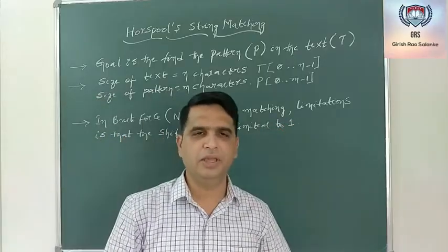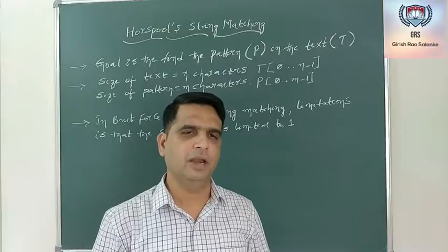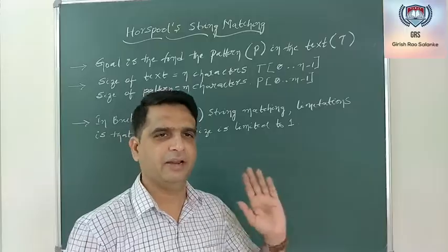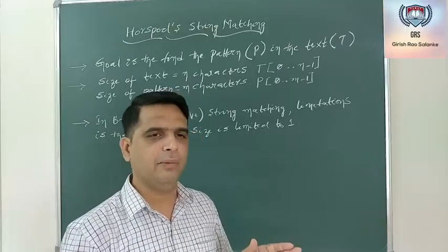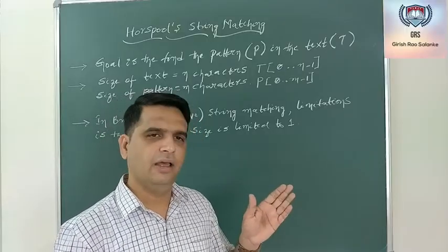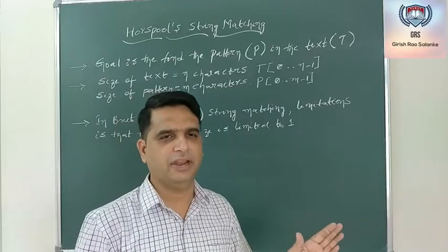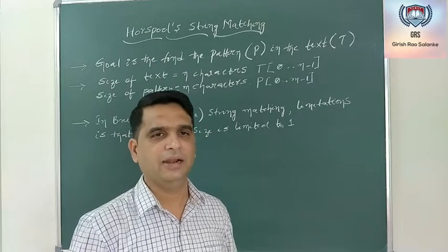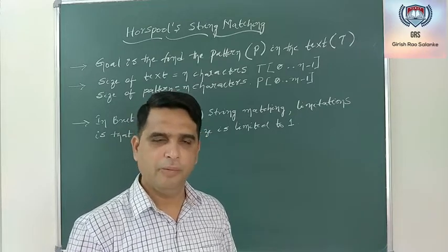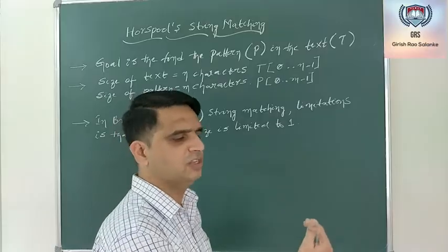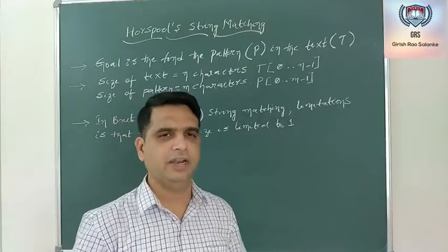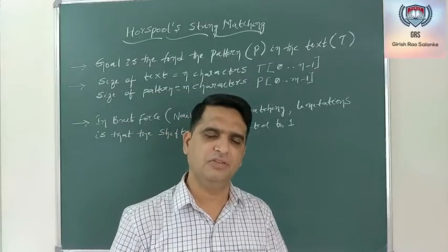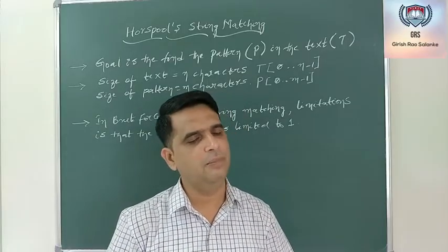In brute force string matching, we align the m characters of the pattern with the first m characters of the text and start comparing the first character. If it matches, we go for the second, third, and so on. If a mismatch occurs, the shift size was just only 1 in every iteration.